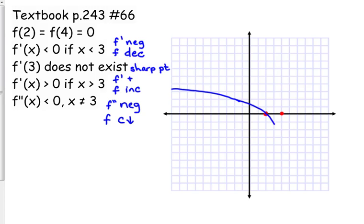At 3, we have a sharp point. At 3, we begin increasing, but we are still concave down. So this is the simplest scenario that we could draw for these given conditions right here.